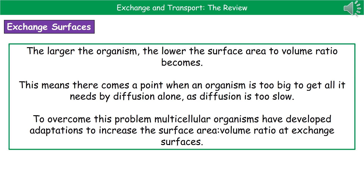As we go to larger organisms, the surface area to volume ratio becomes much lower — the bigger the organism, the lower the ratio will be. This tells us there's a limit to how big organisms can get and still rely on diffusion to obtain everything they need, because beyond a certain size the surface area to volume ratio becomes too low and diffusion is too slow.